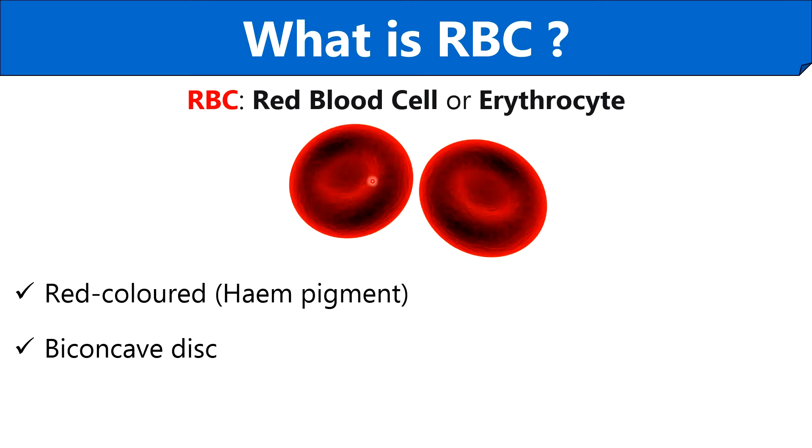A normal RBC appears as a biconcave disc with a small dent in the central portion. Its diameter normally ranges from 7.5 to 8.7 micrometers.